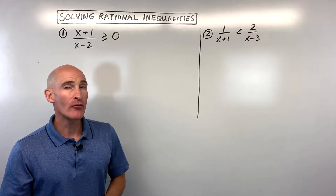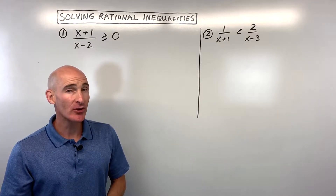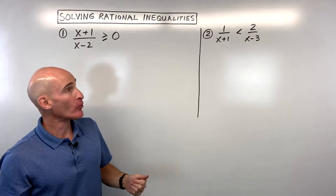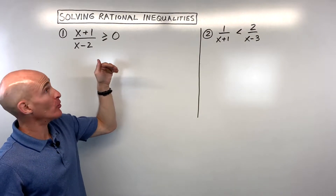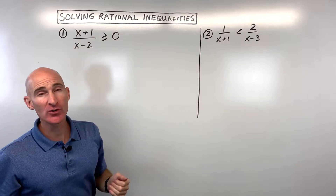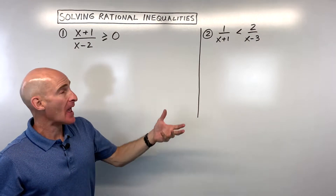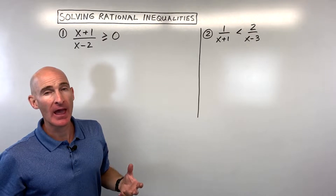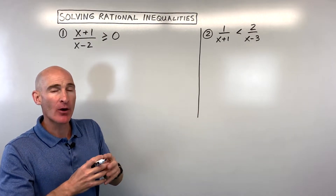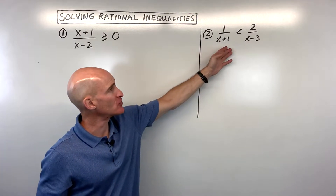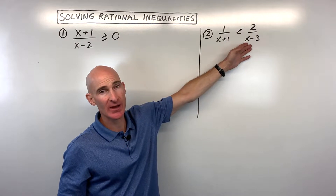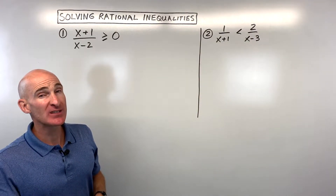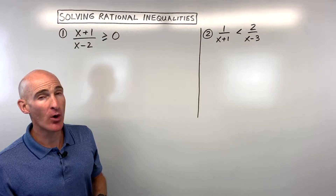In this video, you're going to learn how to solve rational inequalities. Rational means like a ratio, like a fraction. What we're going to do is get everything on one side of the inequality, set it to zero, and then combine that quantity into one fraction. So if you have two fractions, like in example number two, you're going to want to combine them into one fraction.